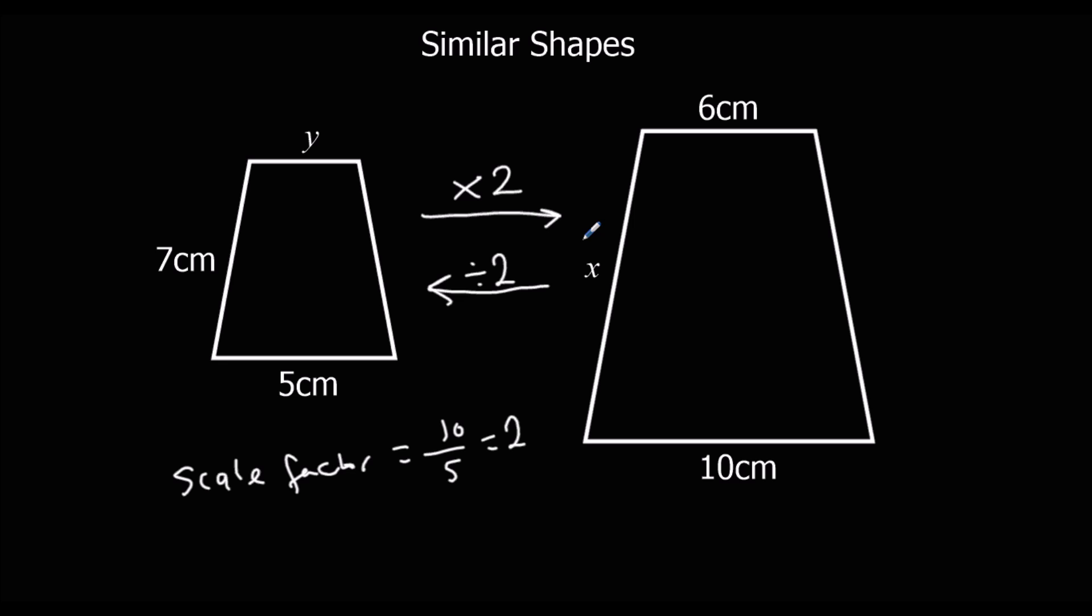So now I'm able to find the missing lengths. So if I want to find this x here, that one goes with the 7. The 7's the same one on this shape. So I do 7, so x is 7, times the scale factor, which is times 2. So that means x is 14.